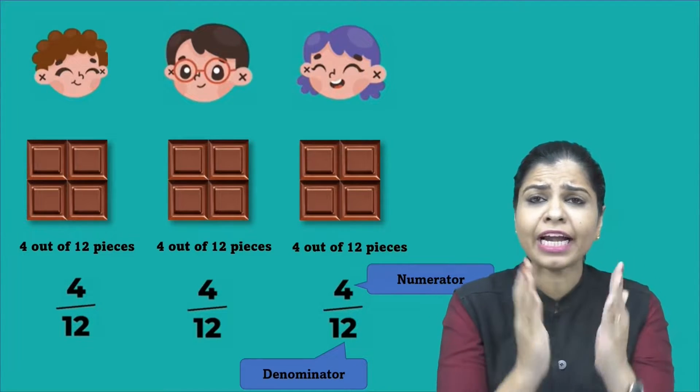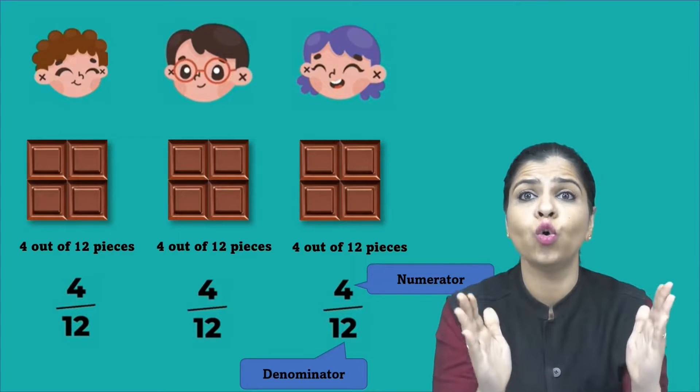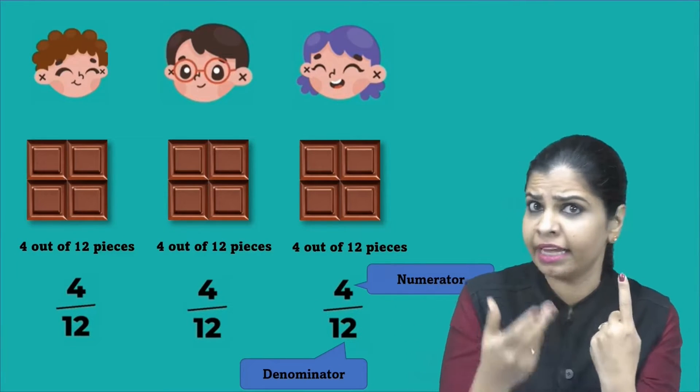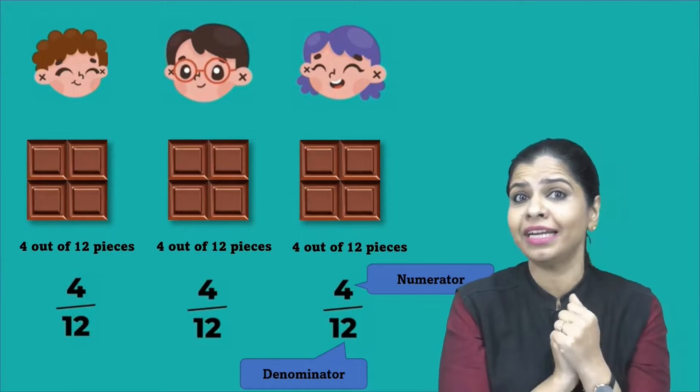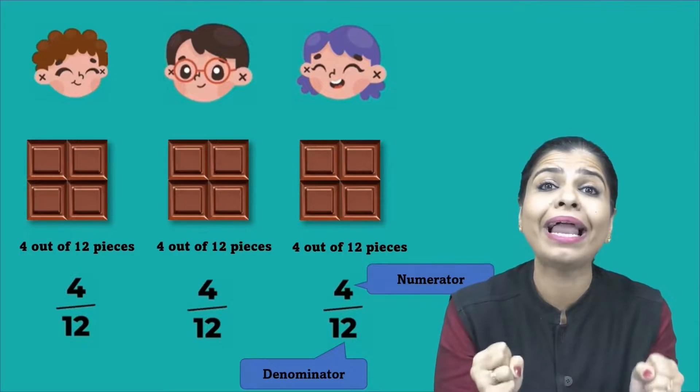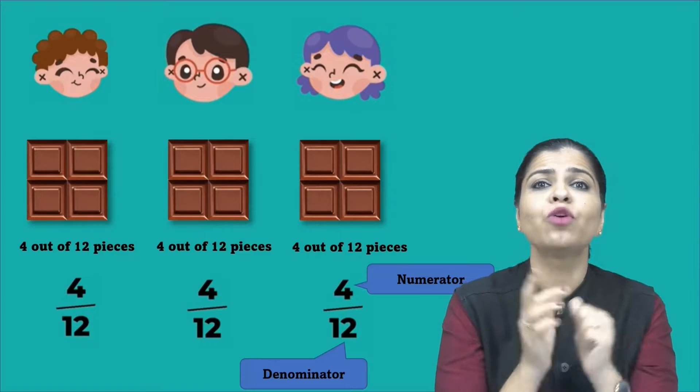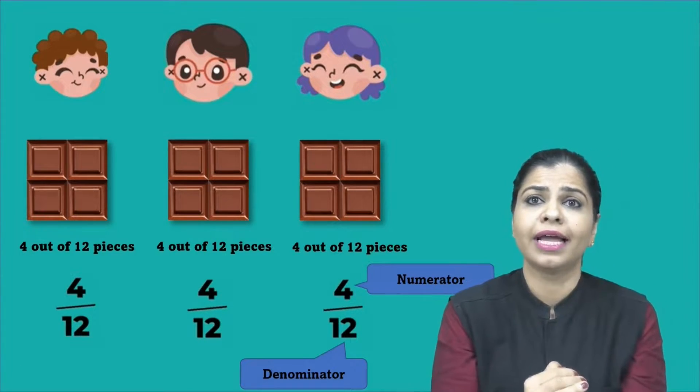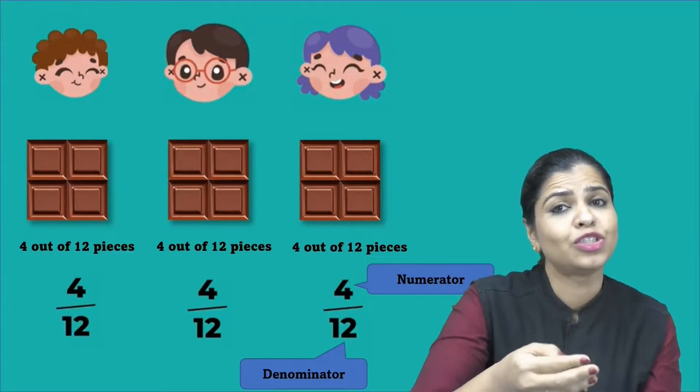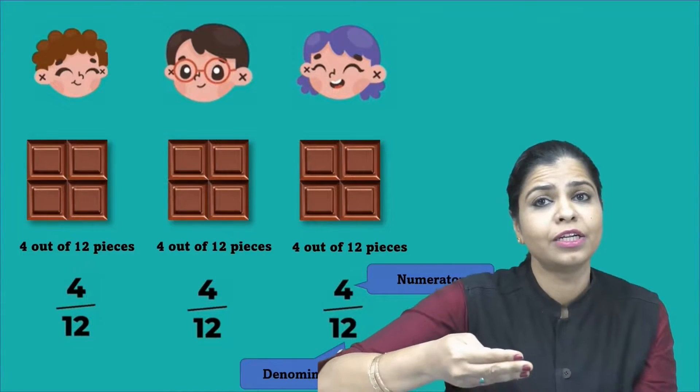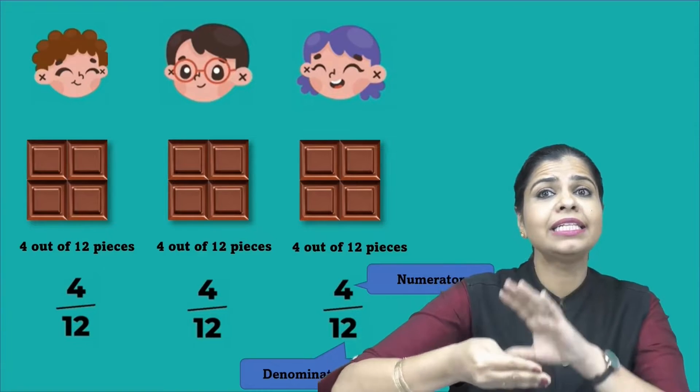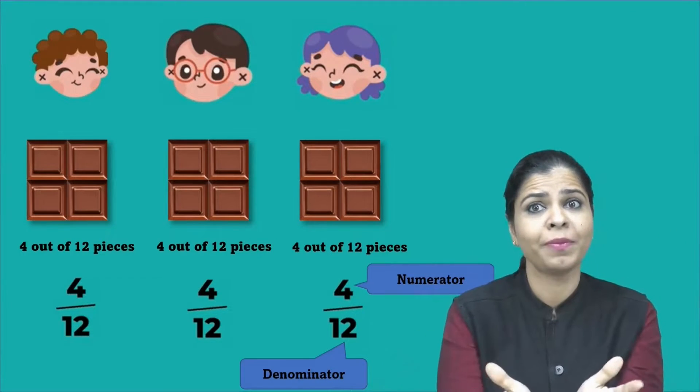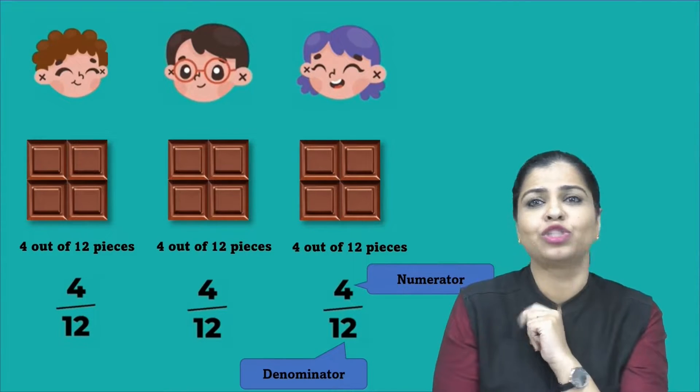Now what do they indicate? Denominator indicates the whole. Whole. When I say whole, how many? One bar. Definitely yes. But how many pieces did that have? It had twelve pieces. So twelve goes into the denominator. And what was the individual share that each got? It was four pieces. So that is the numerator. So numerator indicates the part of that whole that each has got, whereas the denominator indicates the whole, that is the twelve pieces.